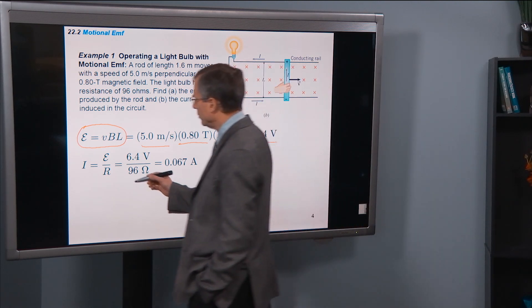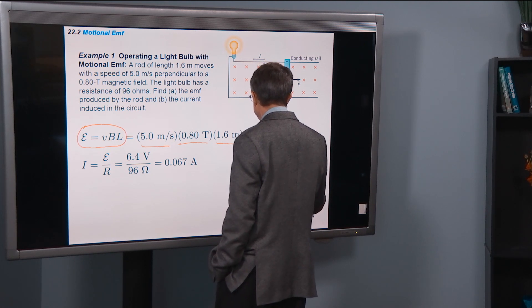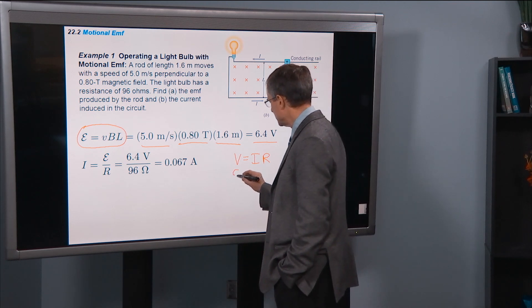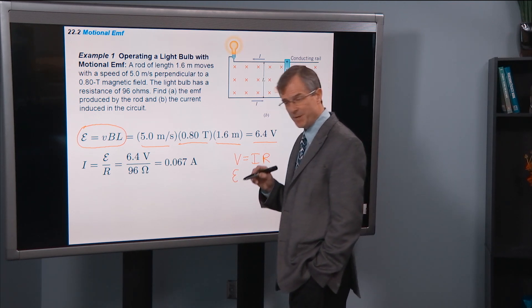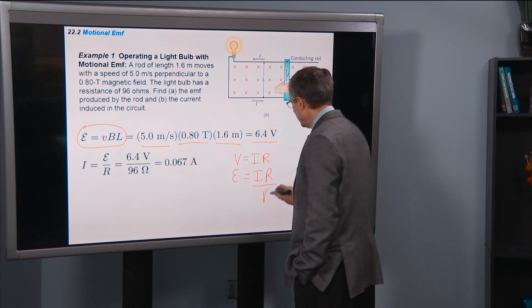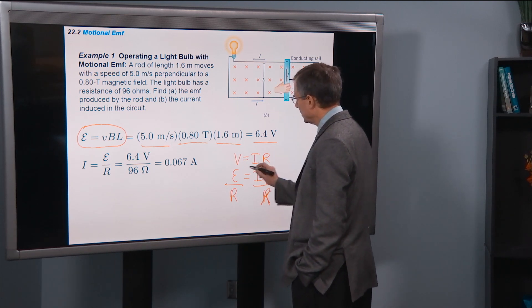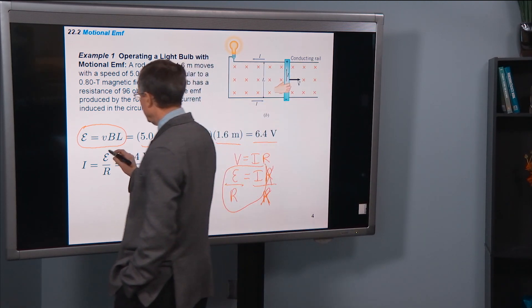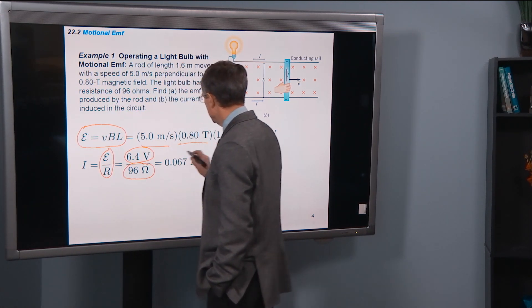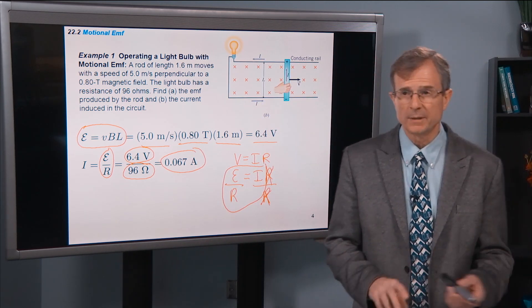But the EMF is a special name for a voltage created, induced by motion in this particular case. And we know through Ohm's law that V equals IR. If you want to find the current and you know that the voltage is the script E, EMF equals IR. Then we can divide by R on both sides to get that the current is E over R. So there's our EMF, here's our resistance, and we get a very small but not negligible current in the conductor.